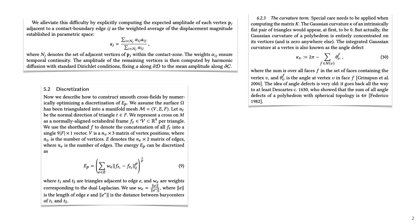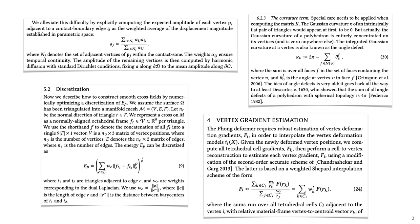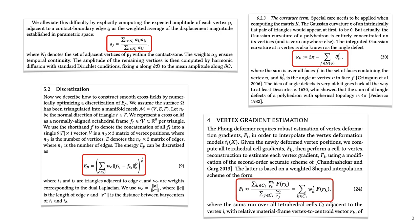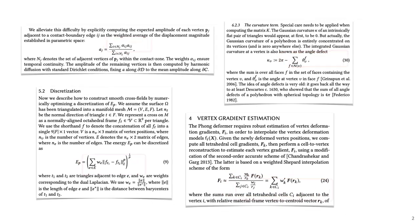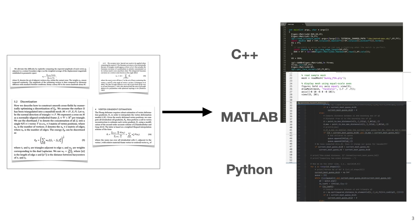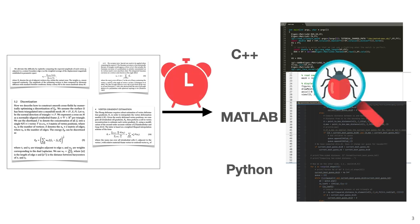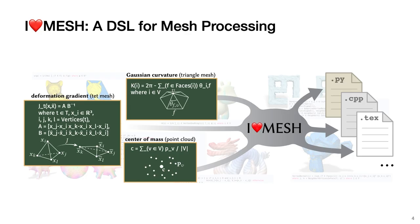Mesh processing algorithms are often communicated via concise mathematical notation. However, conversion of notation into working code remains a time-consuming and error-prone process. Ahad Mesh was designed to resemble notation commonly used in visual and geometric computing, automating the process of converting notation into code.